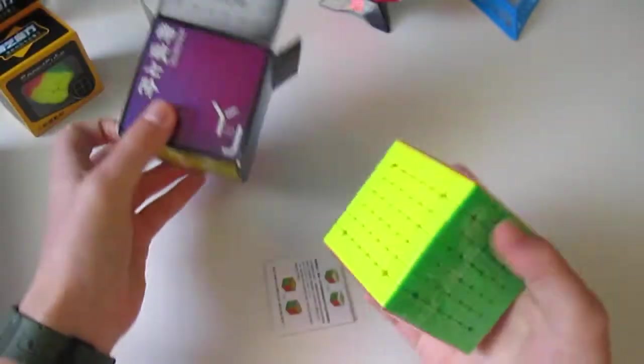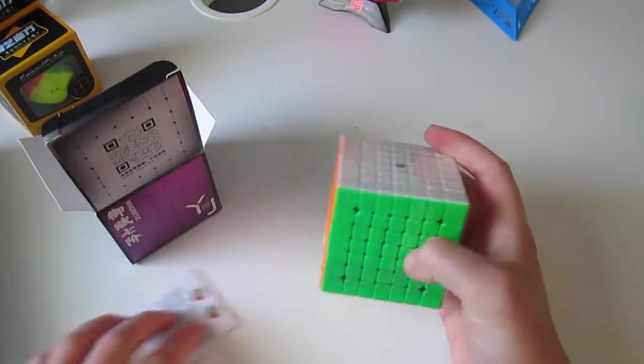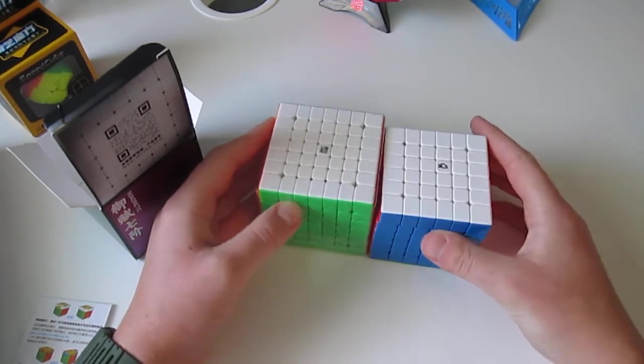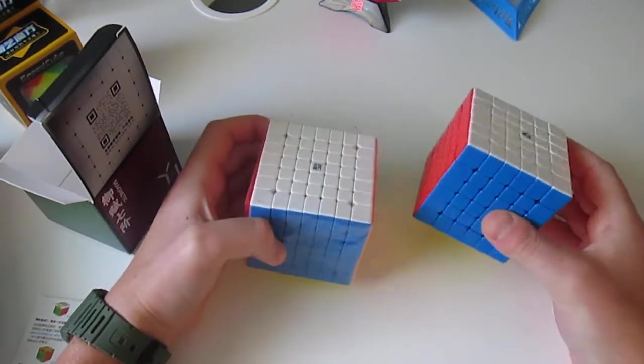It's kind of heavy. Makes sense. Yeah, it feels really nice. Here is my YJ Yufu V2 6x6. Yeah, it looks the same. I mean, this is the 7x7 version of this cube.